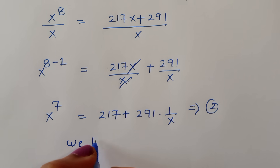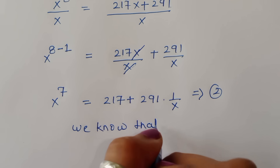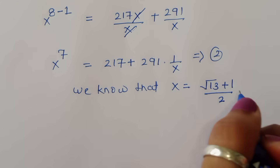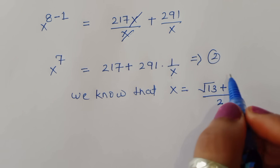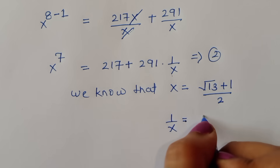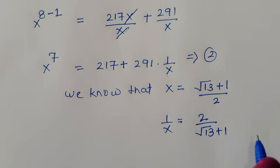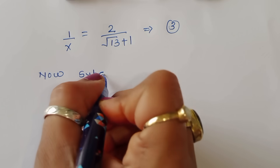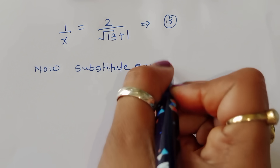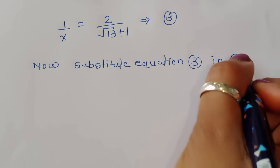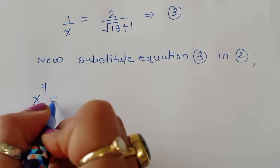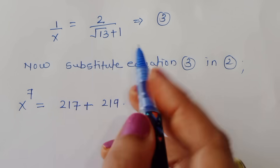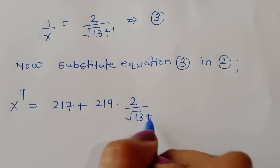We know that x = (√13 + 1) / 2, so 1/x = 2 / (√13 + 1). This is equation 3. We substitute this into equation 2 to find x^7.